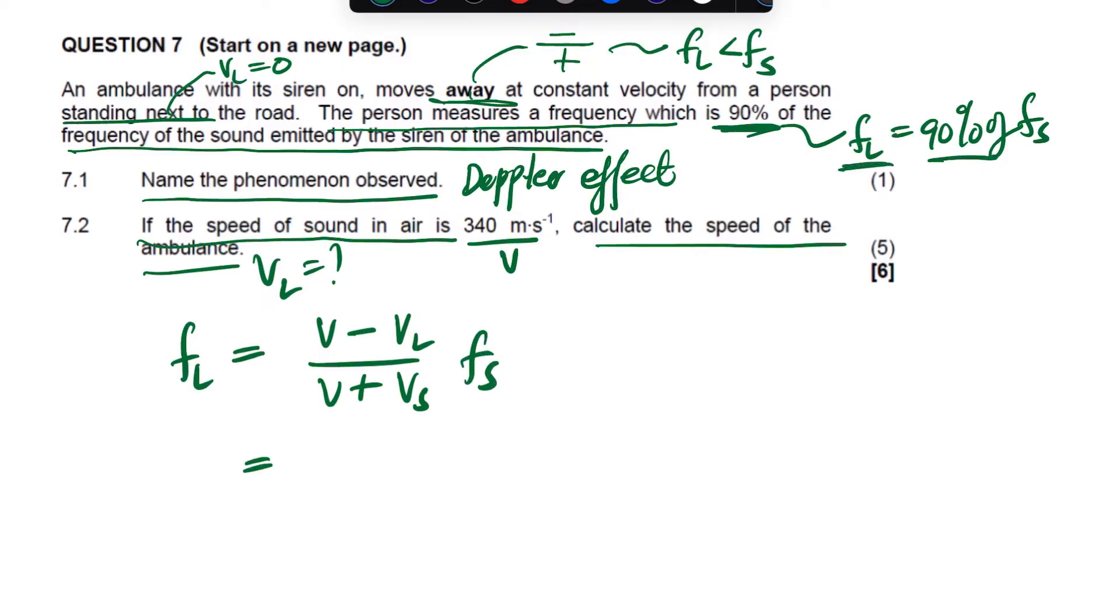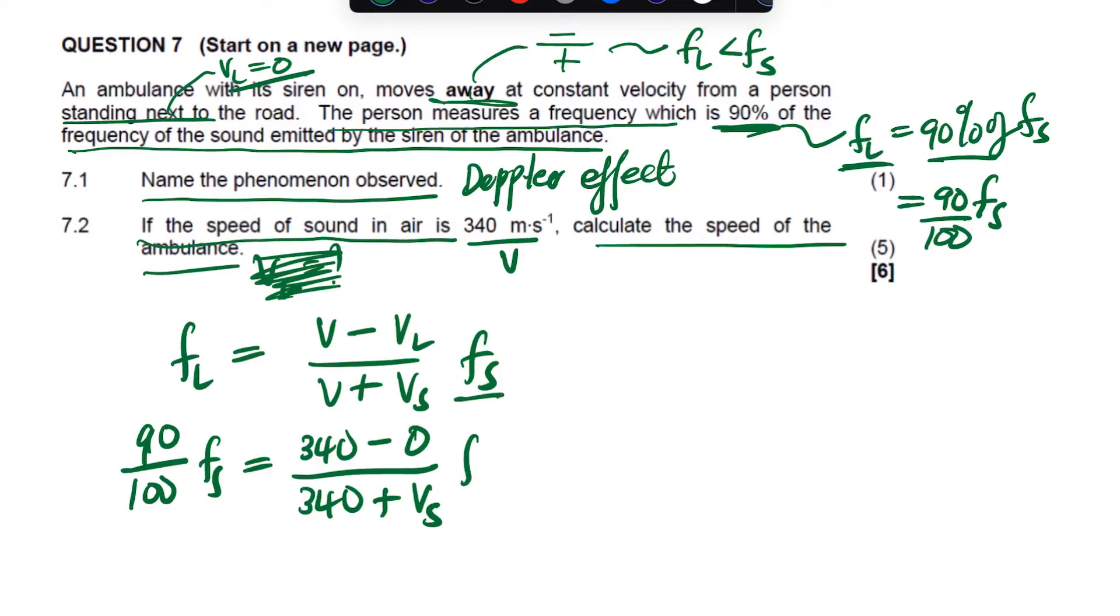So now, the frequency of the listener we have here, it's going to be, if you put that, it's going to be 90 times, 90% times FL. So, it's 90% you divide by 100. So, this is going to be 90 over 100, because it's in percentage, times FS. And then, we are told that the velocity of the speed in the air is 340, minus the velocity of the listener is the one that we want. And the velocity of the source, no, the velocity of the listener is zero. Velocity of the listener is zero. And the velocity of the source is the one that we want. Times by the frequency. The frequency of the source we are not given, it's FS.